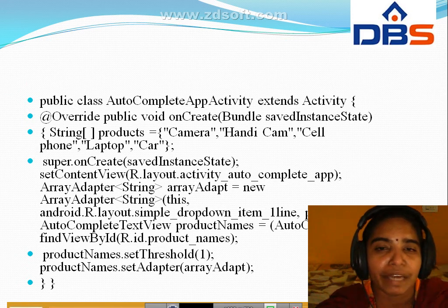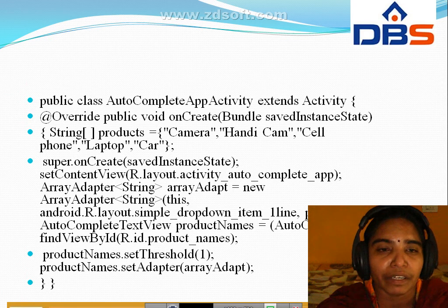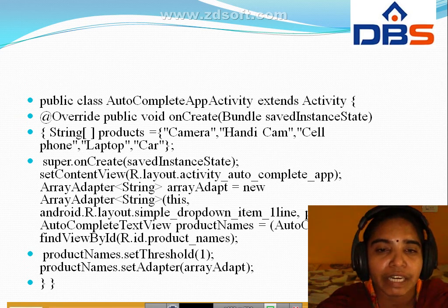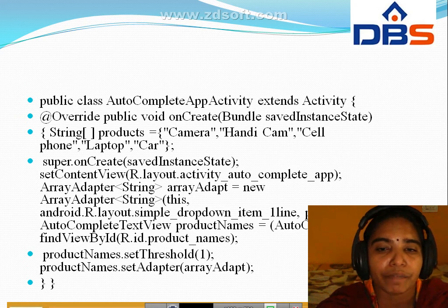Public class auto complete app extends the activity. For the override on create method, we define the products as a string array with names: camera, handycam, cell phone, laptop, car. We set the content view in the layout activity. For the array adapter, we use R.layout.simple drop down item 1, with the products array. Then auto complete text view product names dot set threshold one, product names dot set adapter array adapter.